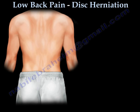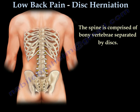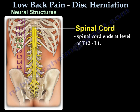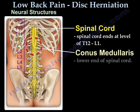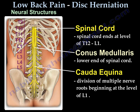This is a low back pain disc herniation video. The spine has bony vertebrae separated by discs. The neural structures include the spinal cord, which ends at the level of T12-L1, the conus medullaris, which is the end of the spinal cord, and the cauda equina, which is a collection of nerve roots that usually begins at the level of L1.